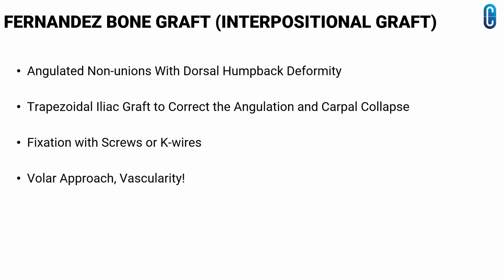The Fernandez bone graft is an interpositional grafting technique useful in angulated nonunions with a dorsal humpback deformity. Fernandez described the use of a trapezoidal iliac graft to correct the angulation and carpal collapse pattern. Fixation is achieved with screws or K-wires, and a volar approach is used with care taken to preserve the vascularity of the fragments.